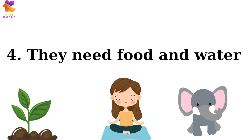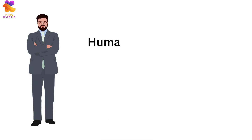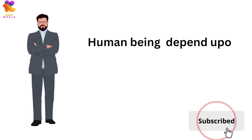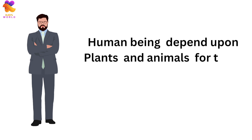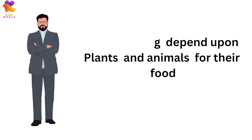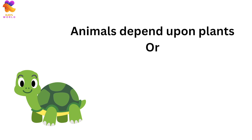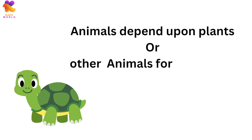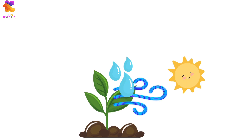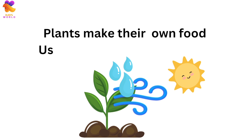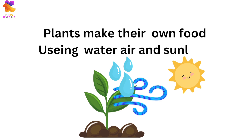Living things need food and water. Human beings depend upon plants and animals for their food. Animals depend upon plants or other animals for their food. Plants make their own food using water, air, and sunlight.